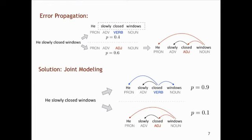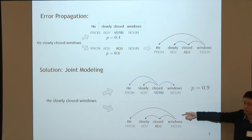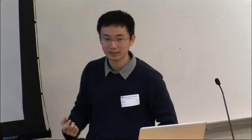In joint modeling, however, if we predict tags and trees at the same time, it's easy to see that the first configuration is much better than the second one. So the joint model will not make the same mistakes as in the pipeline model, and it can correct both parsing and tagging errors.